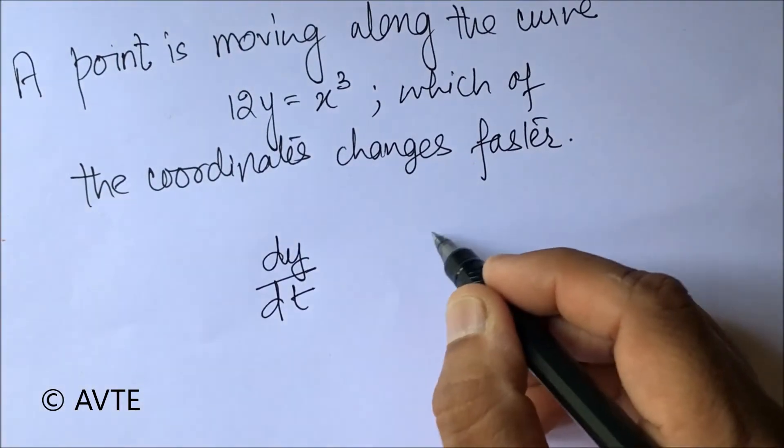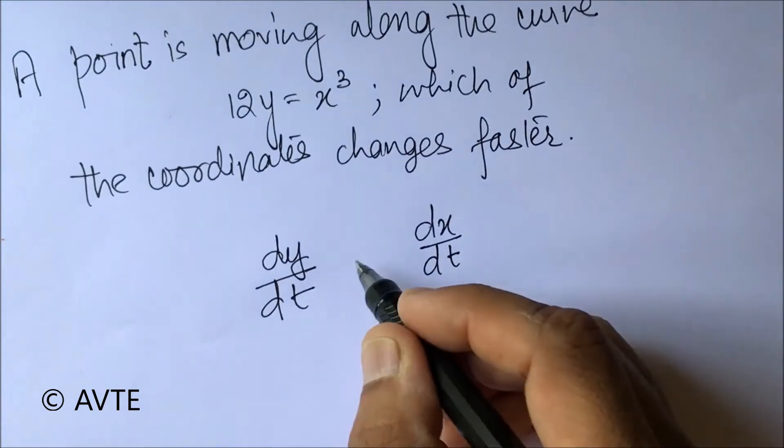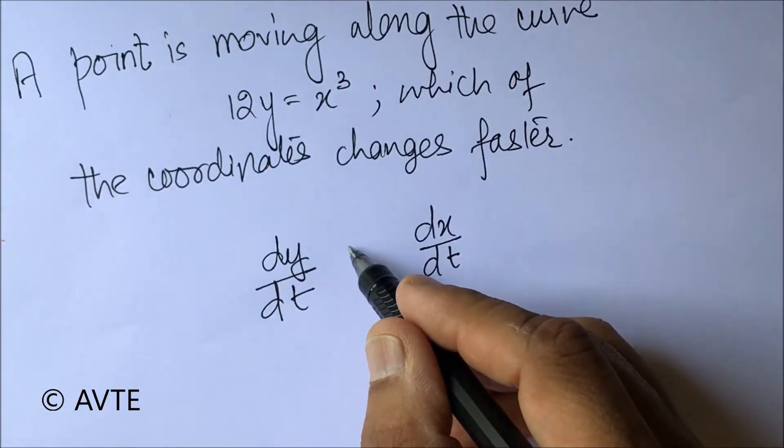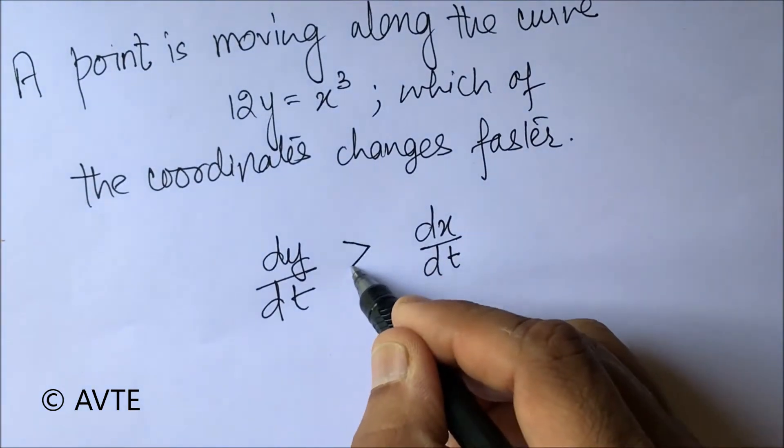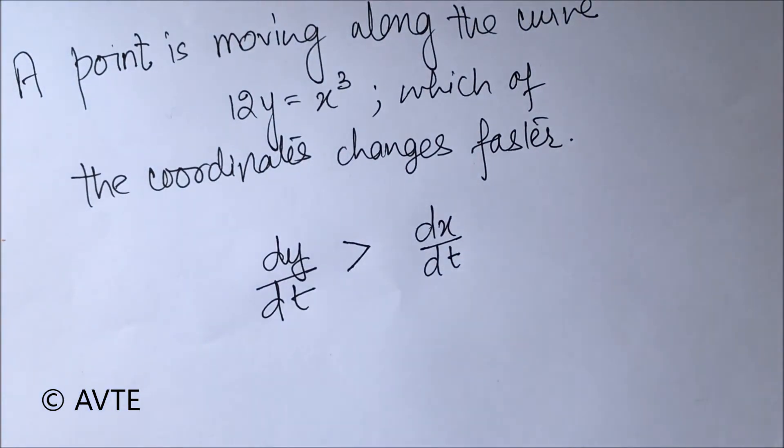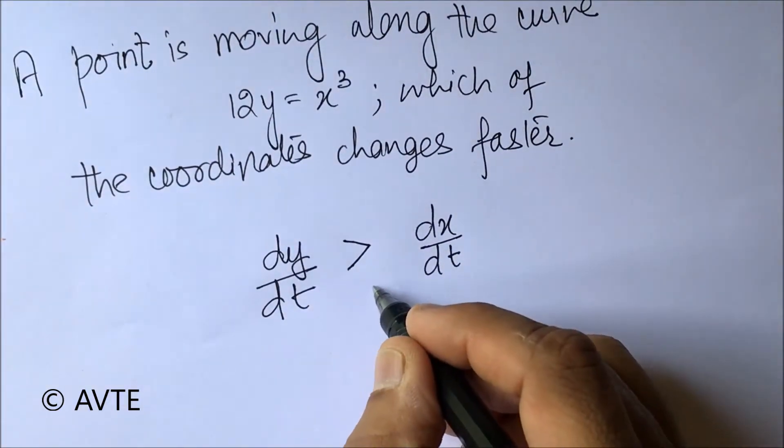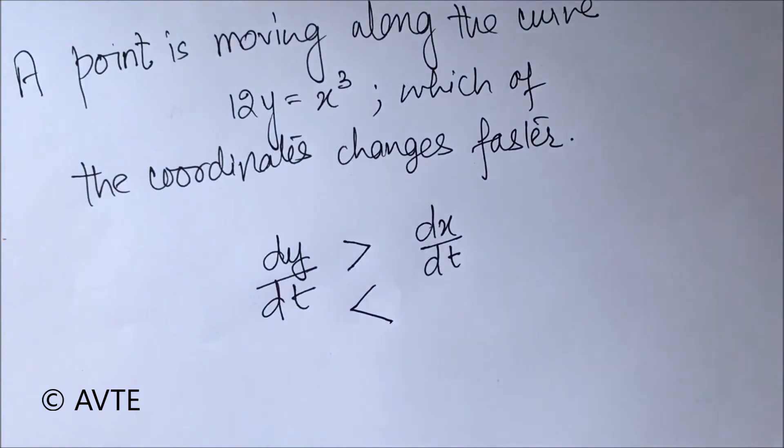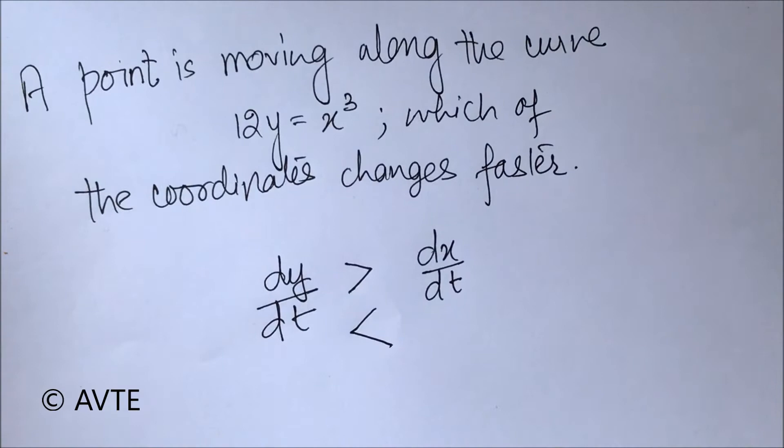Clearly we have to find dy/dt and dx/dt and majorly do two cases. In one case, the y coordinate is moving faster than x coordinate, and secondly where the x coordinate is moving faster than y coordinate. So we can differentiate it.